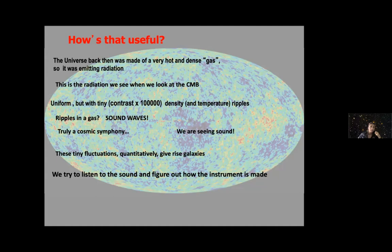This has been crucial to understand cosmology and the universe composition, structure, and evolution. The universe back then was made of a very hot and dense gas, so it was emitting radiation. The CMB is uniform but with tiny, the contrast is about one part in 10 to the 5, density and temperature ripples. Ripples in a gas are basically sound waves.